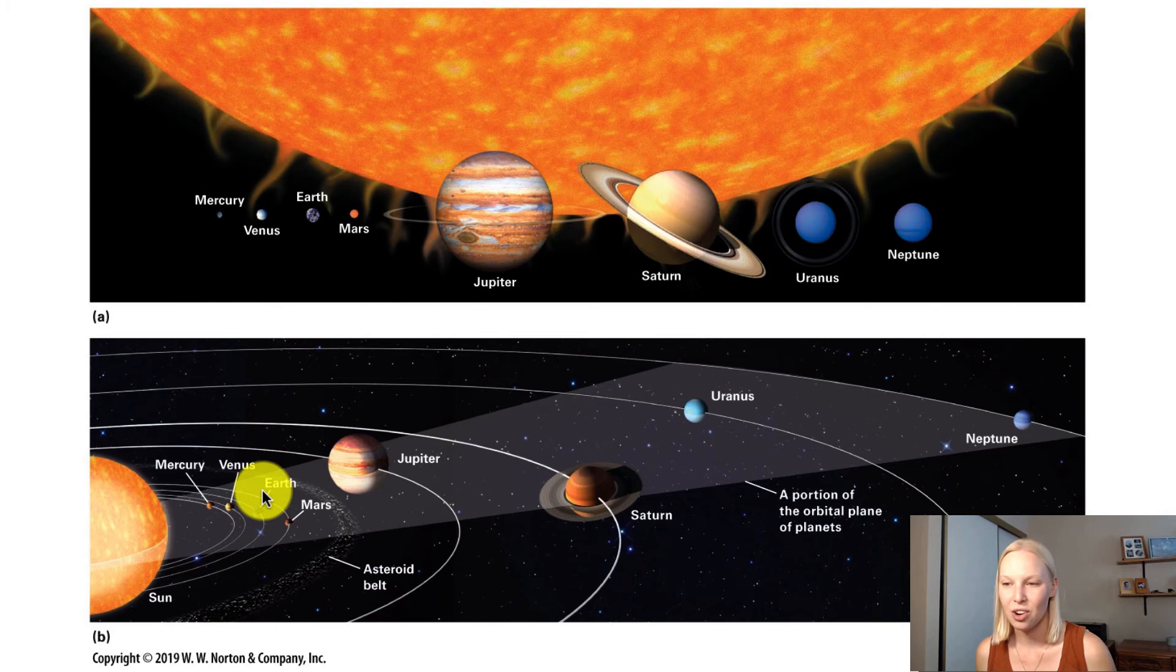We know that we have the sun and our eight planets: Mercury, Venus, Earth, Mars, Jupiter, Saturn, Uranus, and Neptune. But how did our solar system develop?